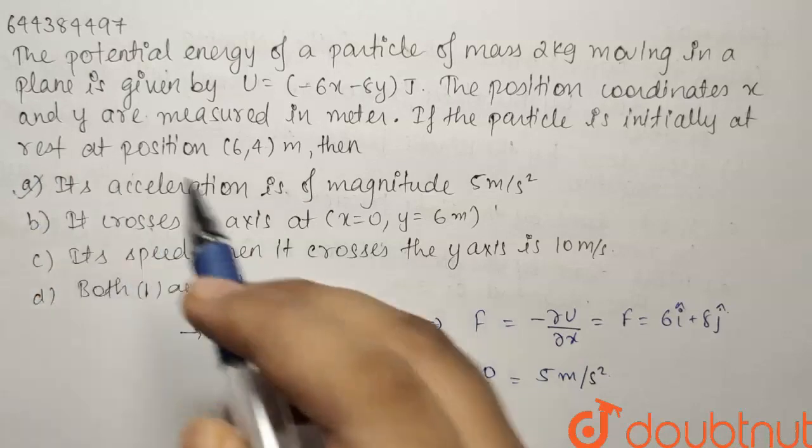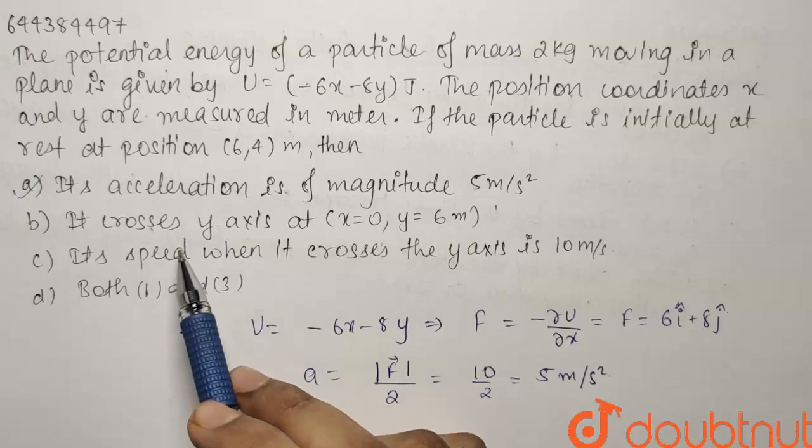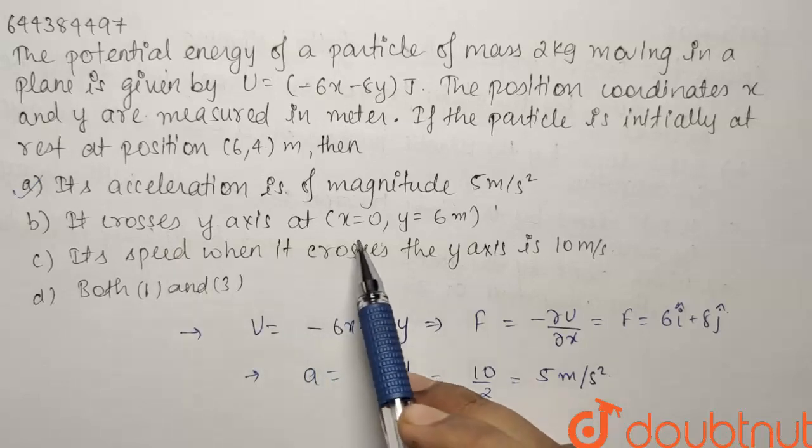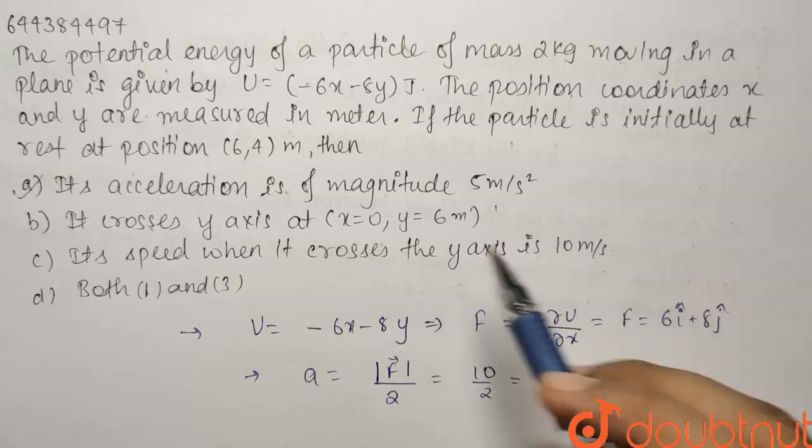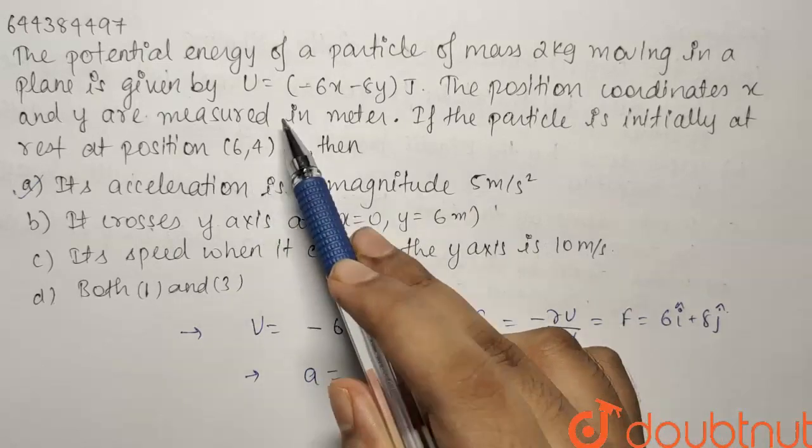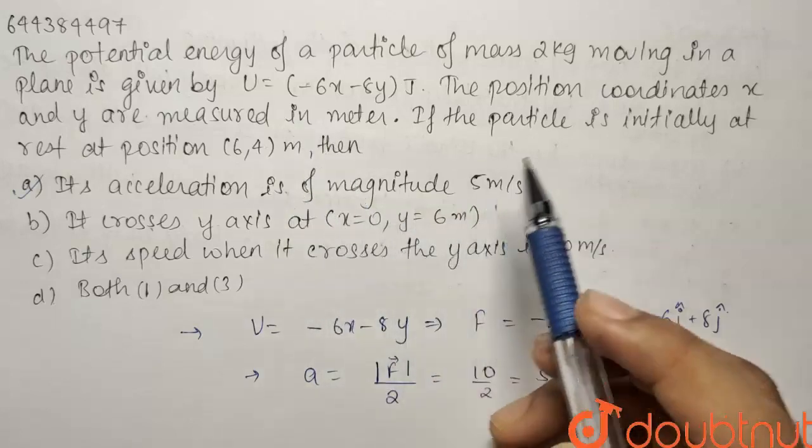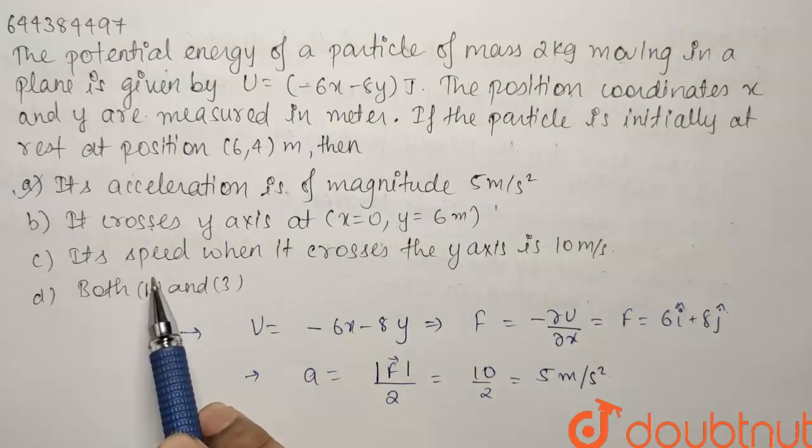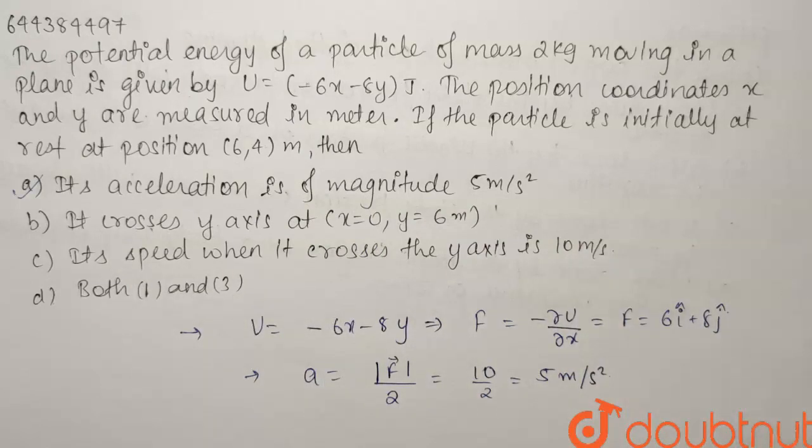So our option A is going to be a right option. Now if we have a look at the other options, option B says that it crosses y axis at x equals 0 and y equals 6. As the acceleration is positive, so basically both the coordinates are going to increase. So it will never cross the y or the x axis. And if we have a look at C, its speed when it crosses the y axis is 10 meter per second. Again this will be wrong because it is never going to cross y axis as the acceleration is positive. So our option A is going to be the only right answer.